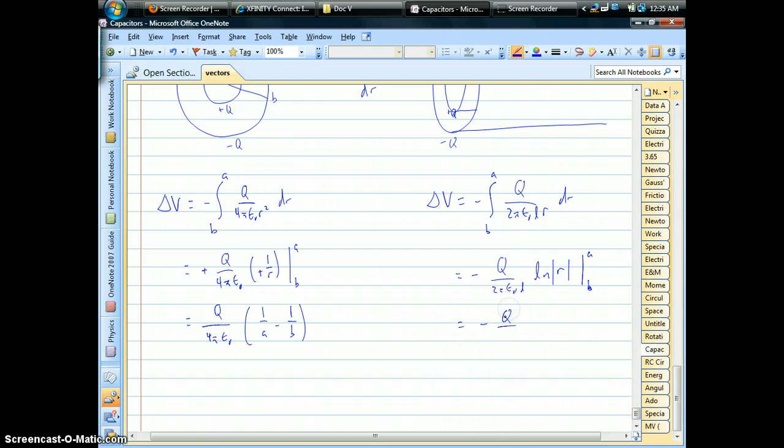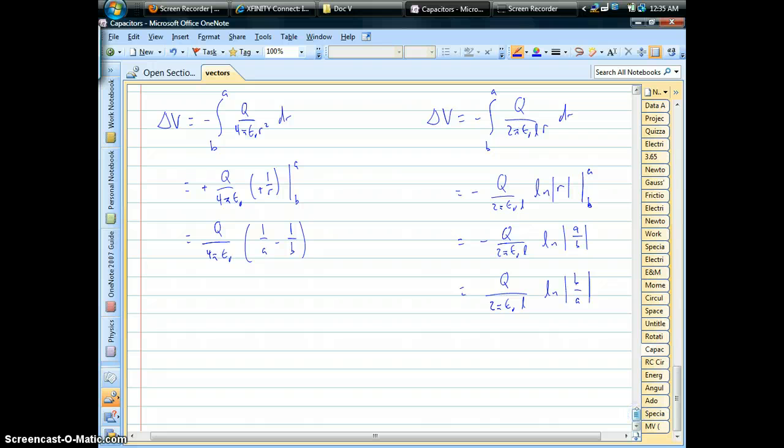Which we have to evaluate between B and A. So, that's going to be this whole mess times the natural log of A minus the natural log of B. Let's write that as the natural log of A over B. With that minus sign, that's going to flip that over to become the natural log of B over A, which will be a nice positive number.